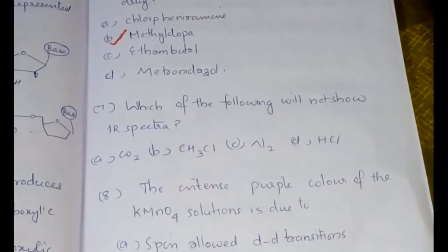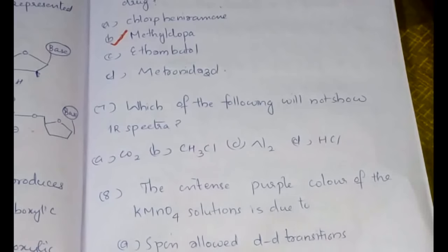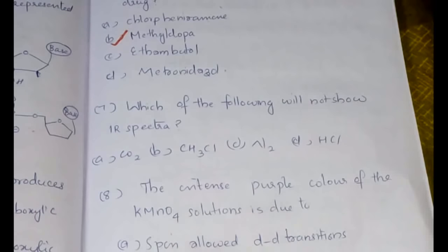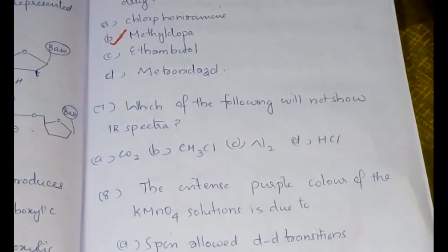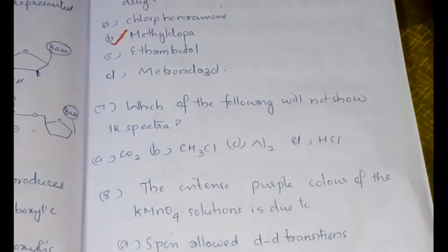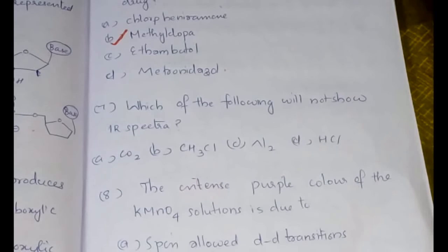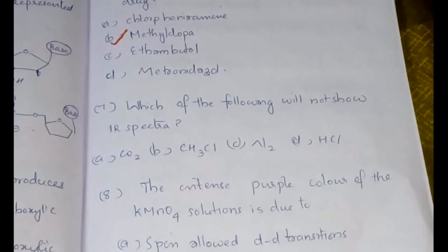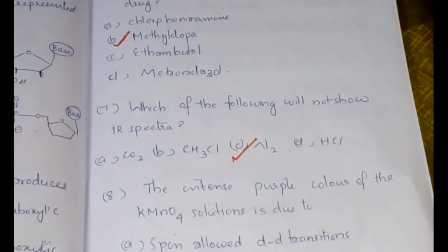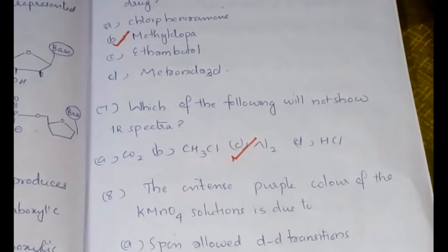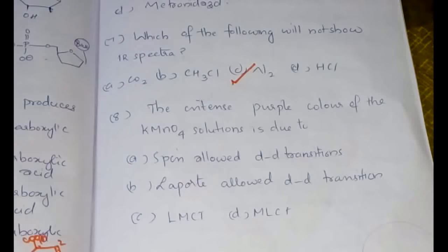The next question we have already discussed, and I have told you the idea behind the question: which of the following will not show IR spectra? Homonuclear diatomics will not show IR spectra, and we have done multiple examples of this. I have highlighted and told you to remember that homonuclear diatomics will not show IR spectra, so the answer should be option C, N2, because N2 is a homonuclear diatomic.